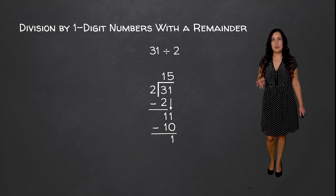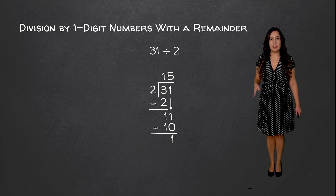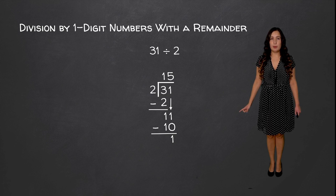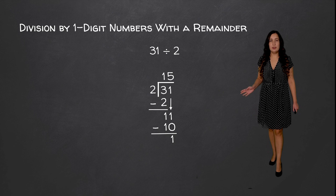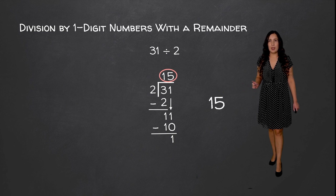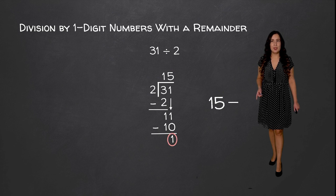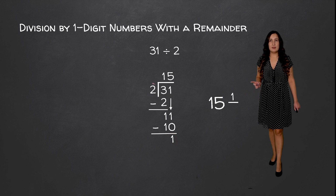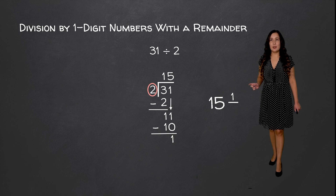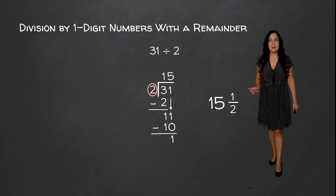Now notice that we have no more digits to bring down, so we're done here. Because we didn't end up with a value of 0 at the bottom, that means that 1 is our remainder. So to write our answer out, we know that 2 goes into 31 15 times, so we're going to write out our 15. We also have a remainder of 1, so we're going to take our divisor — the number that we're dividing by — and that goes in our denominator. So 31 divided by 2 is equal to 15 and a half.